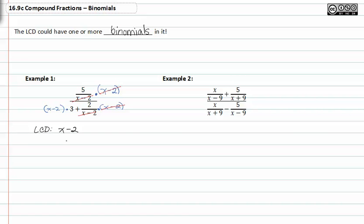So we now have five in the numerator over three times x minus two in the denominator plus two.